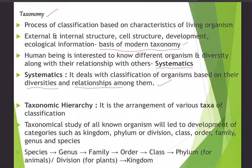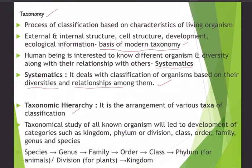Systematics deals with classification of organisms based on their diversities and evolutionary relationships among themselves. For taxonomy, we arrange plants and animals in a ladder — the taxonomic hierarchy. Taxonomic hierarchy is the arrangement of various taxa in classification of plants and animals. The lowest taxon in the taxonomical hierarchy is species and the highest is kingdom.